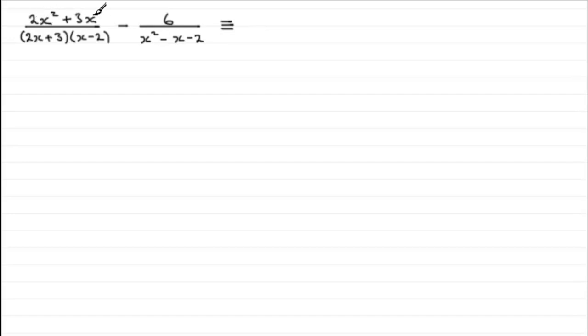So factorizing the top, what have we got? Well, there's a common factor here of x, so we'll just pull that out. We've got x bracket 2x plus 3, and then that's going to be all over another 2x plus 3 multiplied by x minus 2.